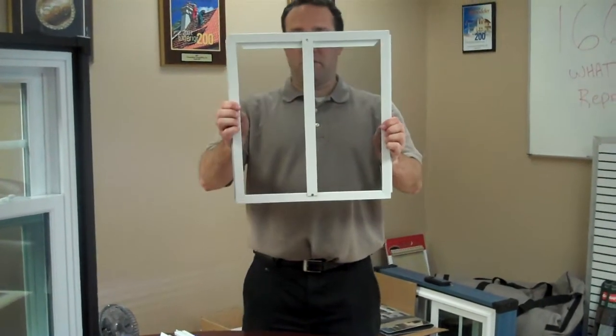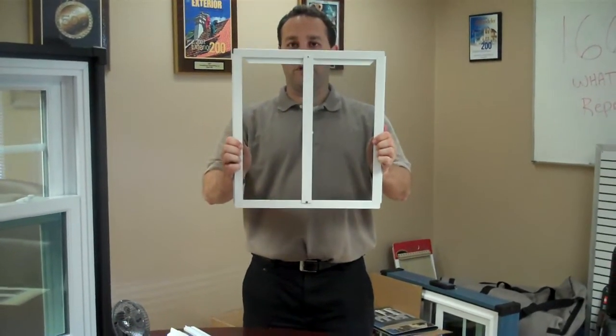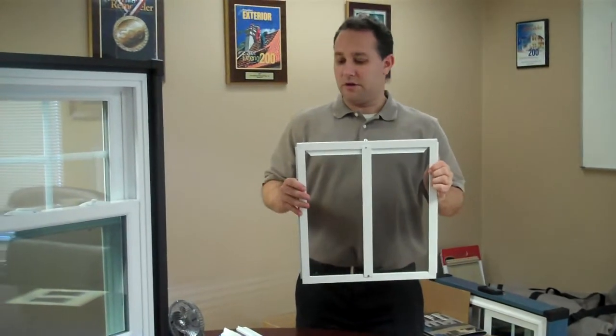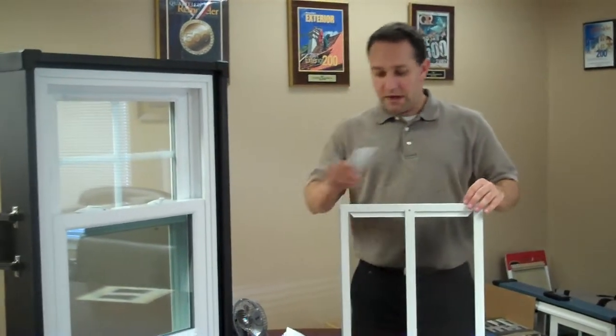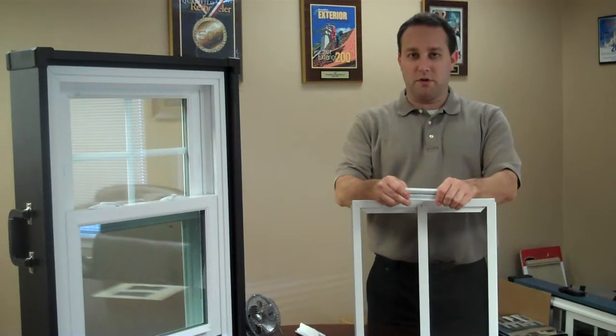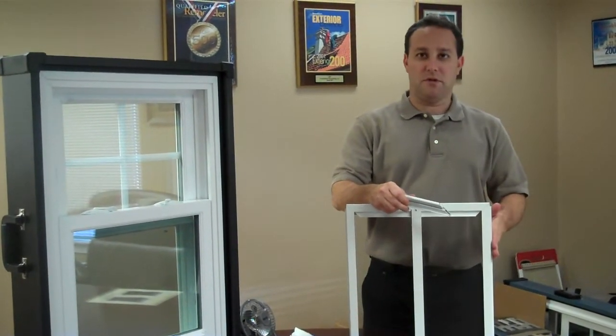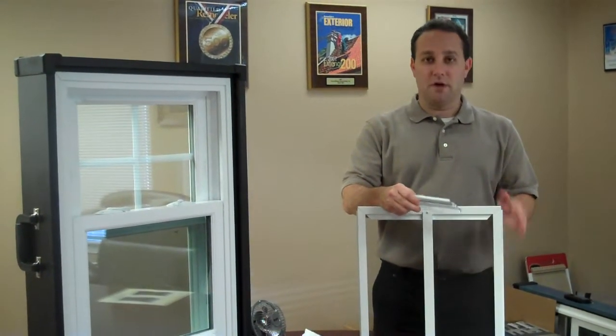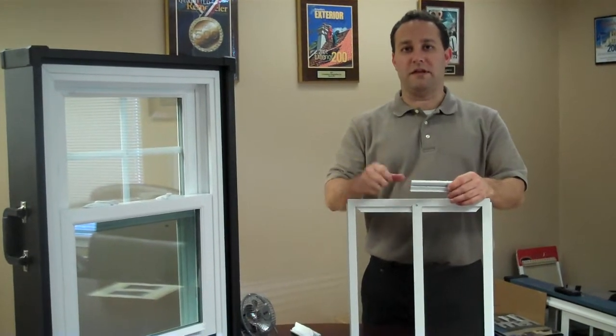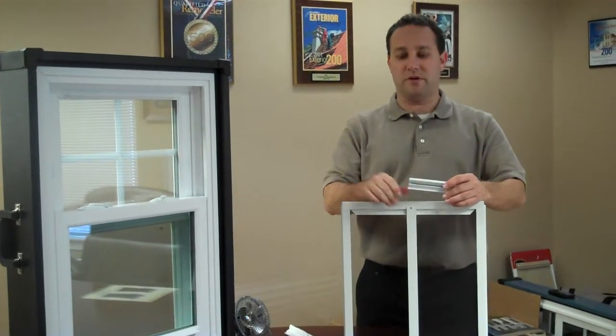In addition, the overall framework of any screen on the Heritage window features a full extruded aluminum frame to the screen itself versus a roll form screen which is a lot looser, flimsier, easier to bend or break.